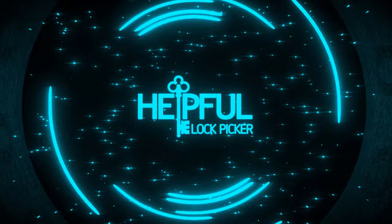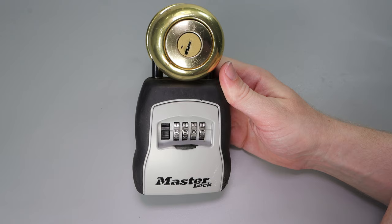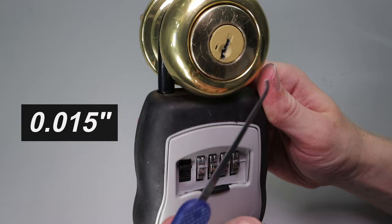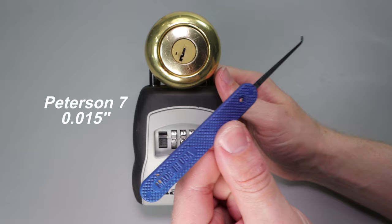Alright, so we're ready to get started with decoding this lock. With the method we're going to use today, we need a pick that is nice and thin - 15 thousandths would do - and one with a really nice steep hook. If you want the exact pick I have here, this is a Peterson hook number 7 in 15 thousandths.